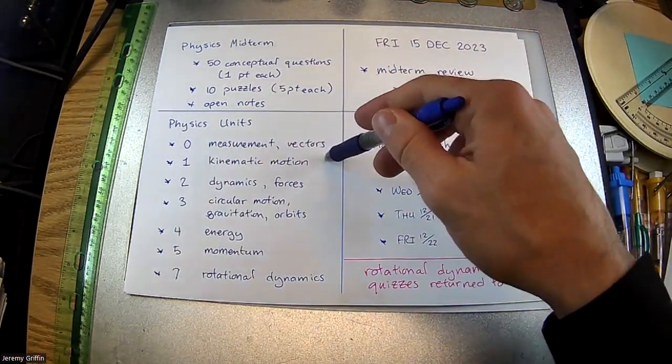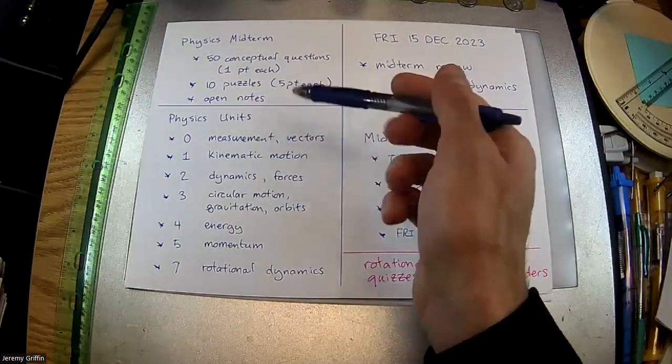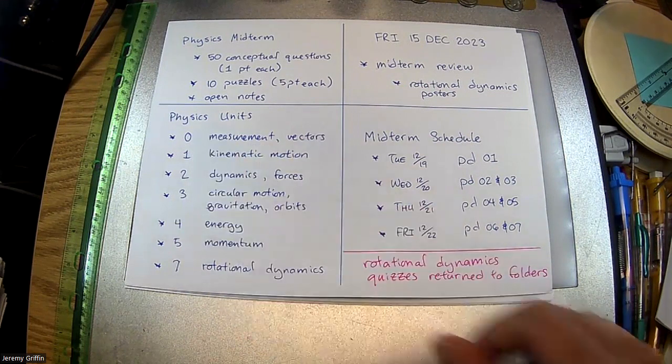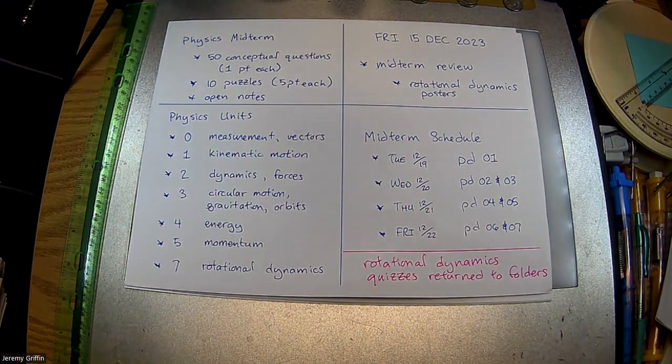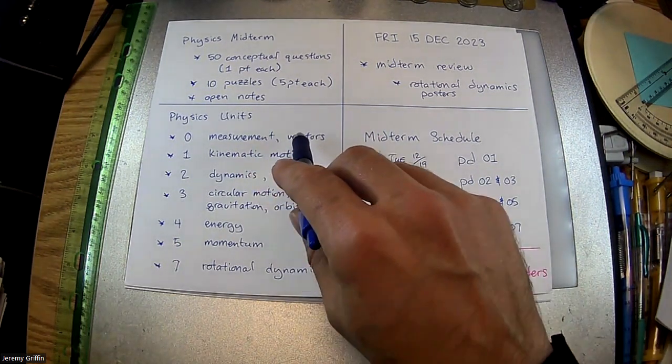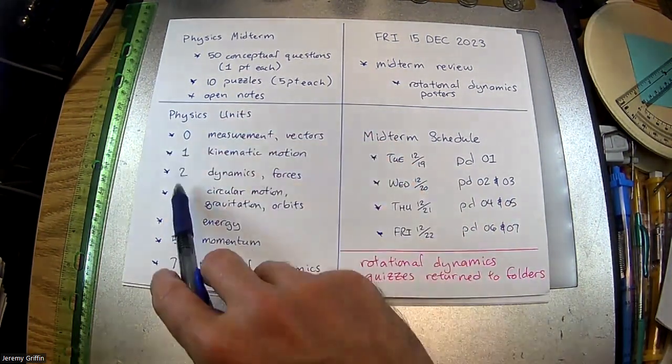So here's a good checklist for everything we've studied so far. So I go by, we did a lot of preliminary stuff like measurement, SI units, vectors, vector components, a little bit of trigonometry, algebra. Then, now these units here are by AP's book. So we're going by AP's book.